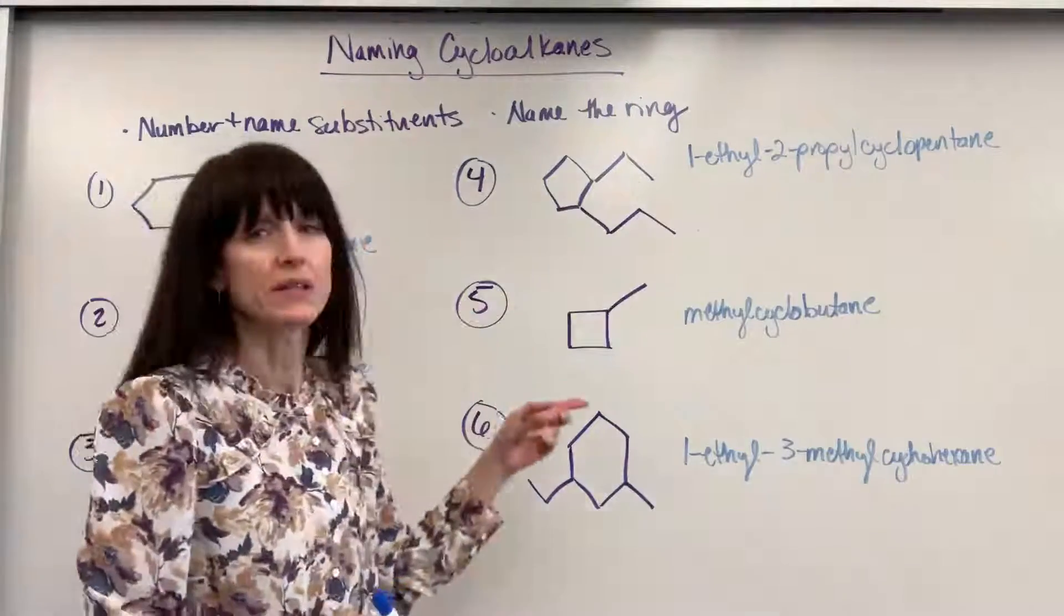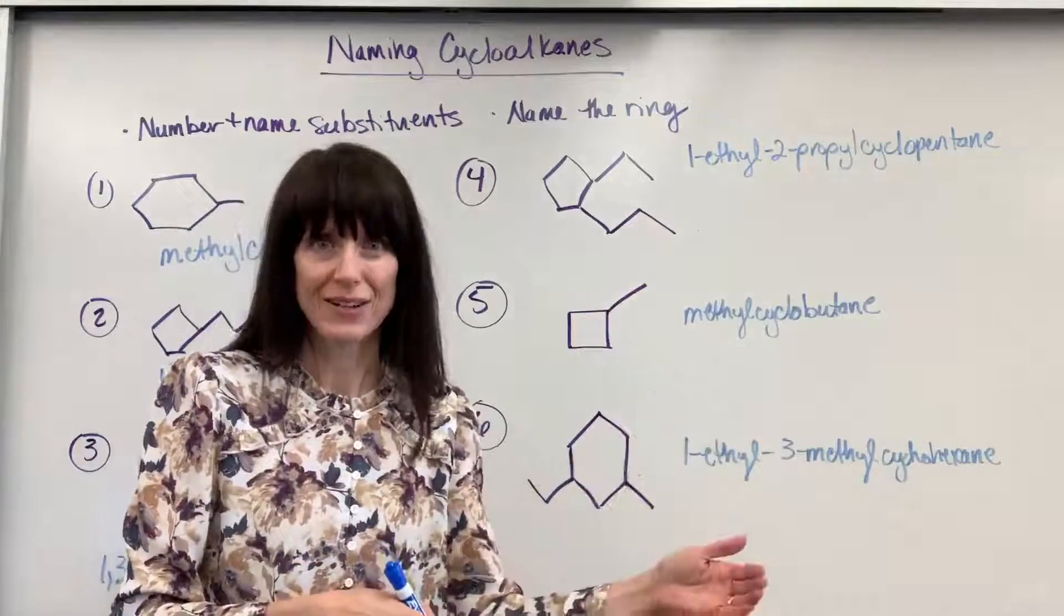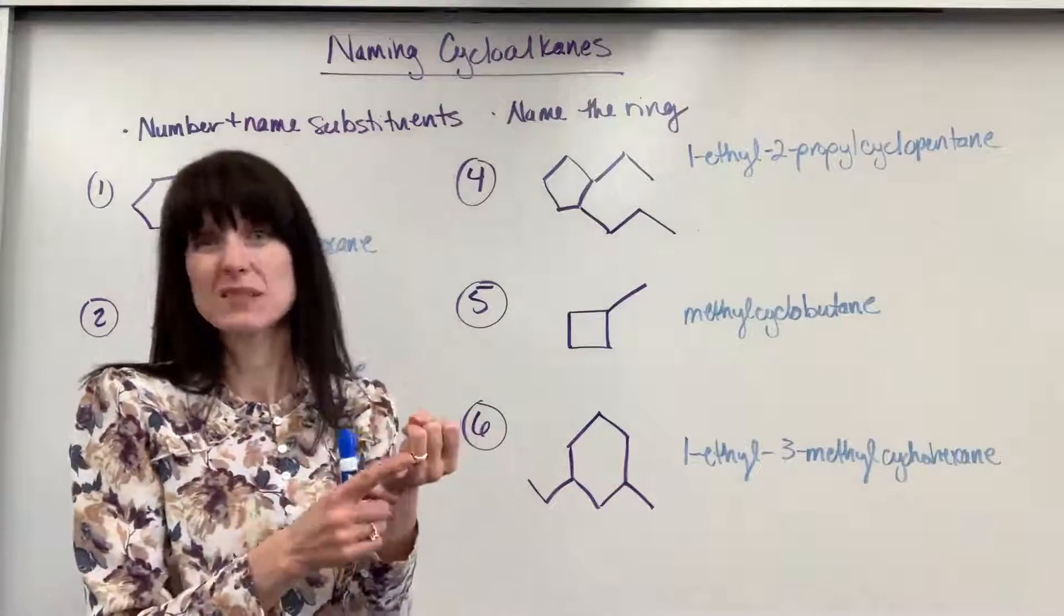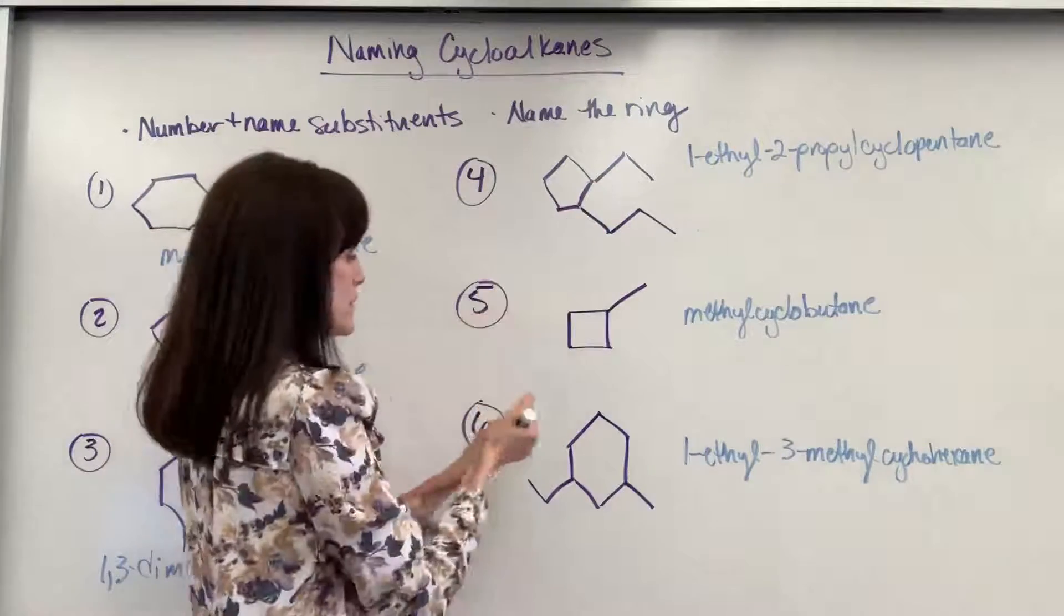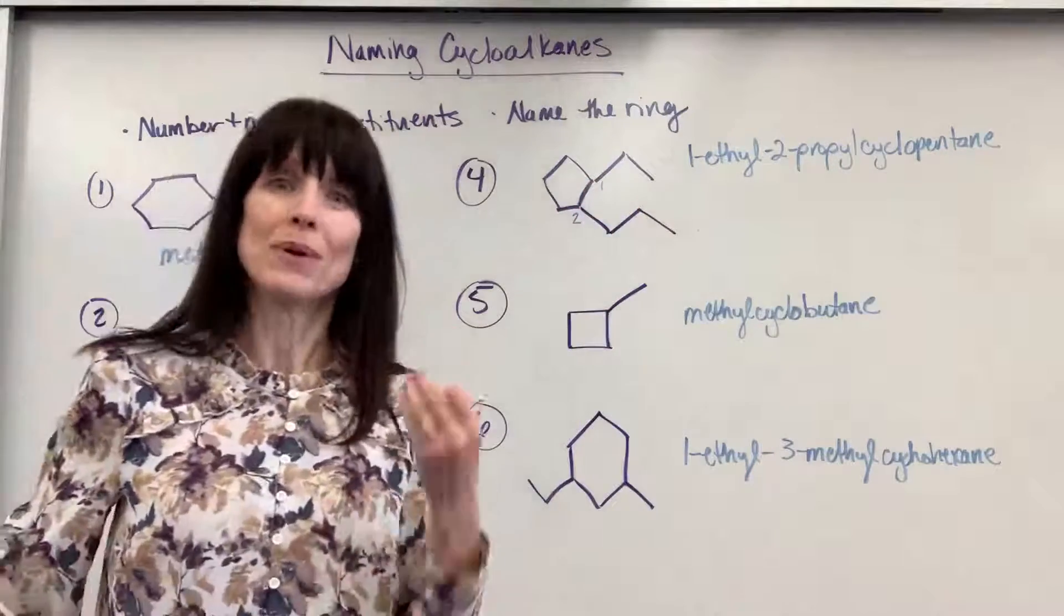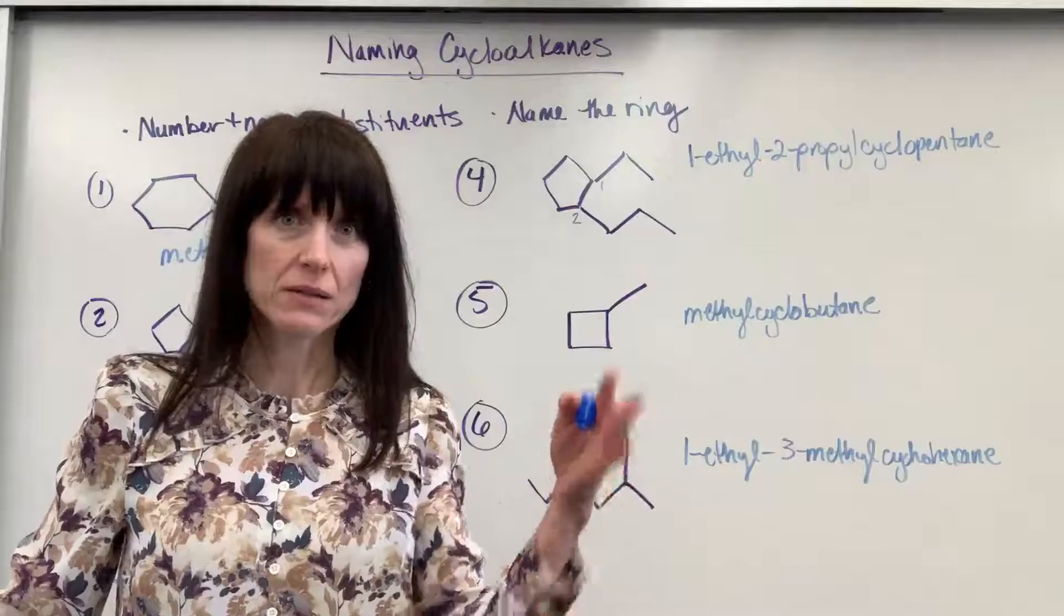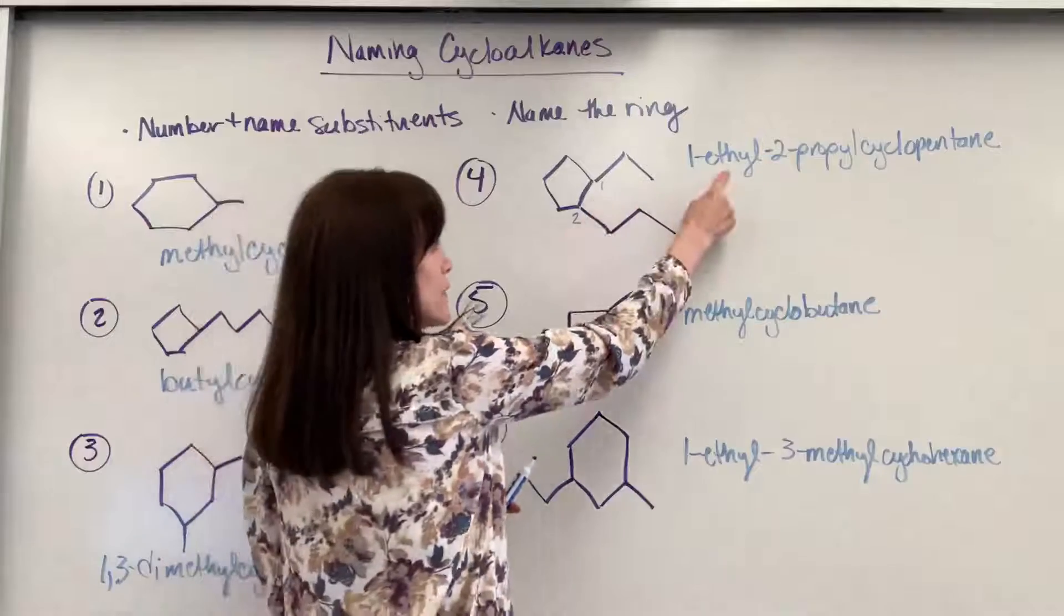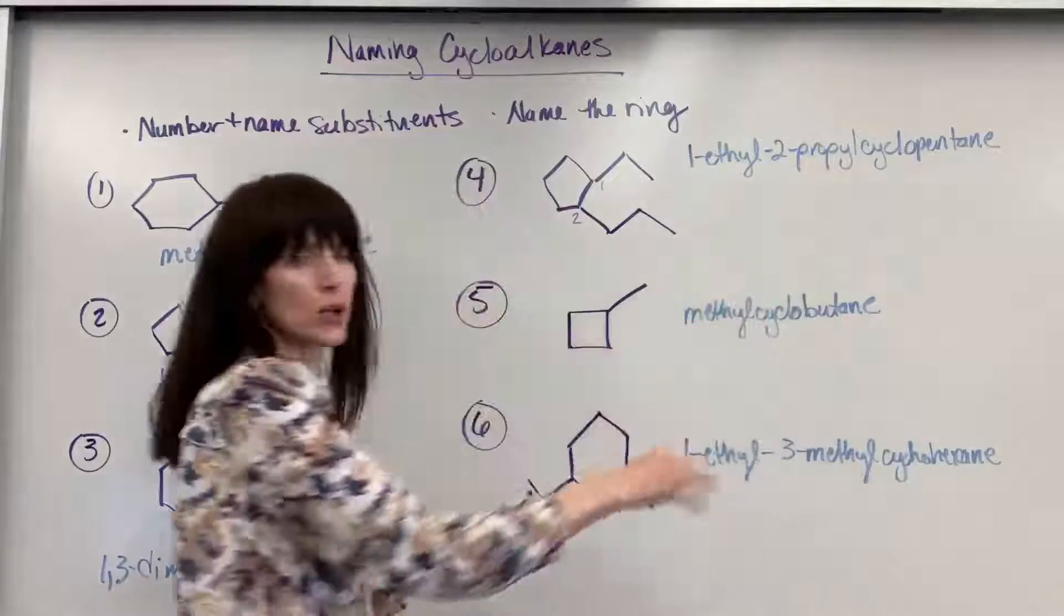We are going to number this so that the smallest, the lowest number, goes alphabetically with the first letter, the letter closest to A. So we are going to number first the ethyl, just because it comes first in the alphabet compared to propyl. So with that, that means the ethyl is going to be the one carbon and the propyl is going to be the two carbon. So if you have multiple substituents, when you're numbering, give the lowest number to the alphabetical, the letter that comes first in the alphabet. All right. So this is going to be one ethyl. Notice the dash I put in between the numbers. Two propyl cyclopentane. Pretty cool.